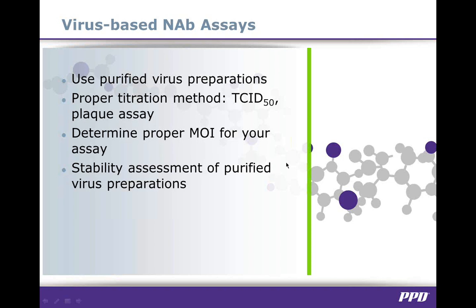If cell-based NAB assays require the use of recombinant viruses, purified virus preparations that must be assessed for stability and infectivity over time and titered accordingly should be used, either through a TCID-50 or a plaque assay. Additionally, the MOI or multiplicity of infection needs to be determined during the validation stage as this is a critical assay parameter.